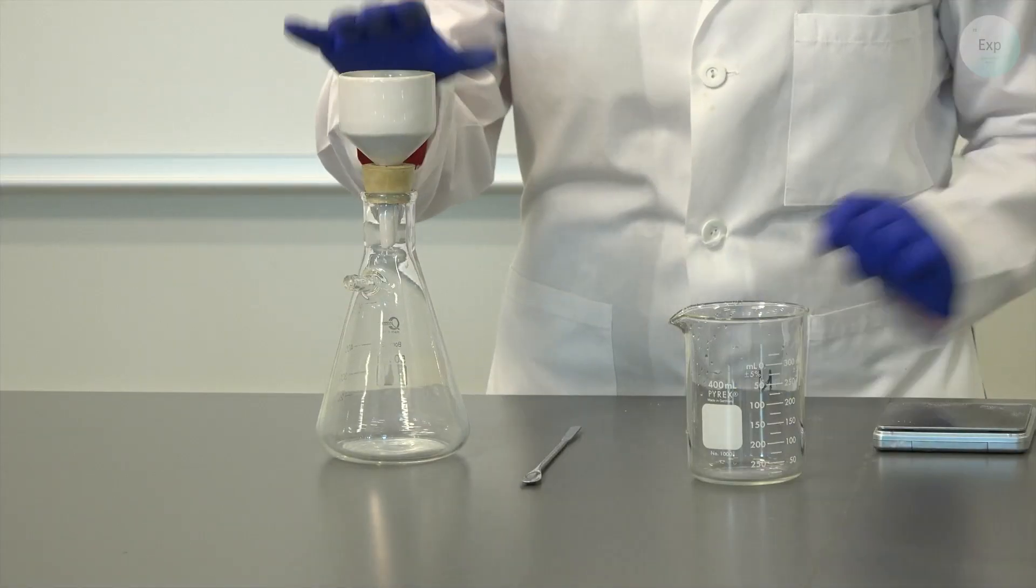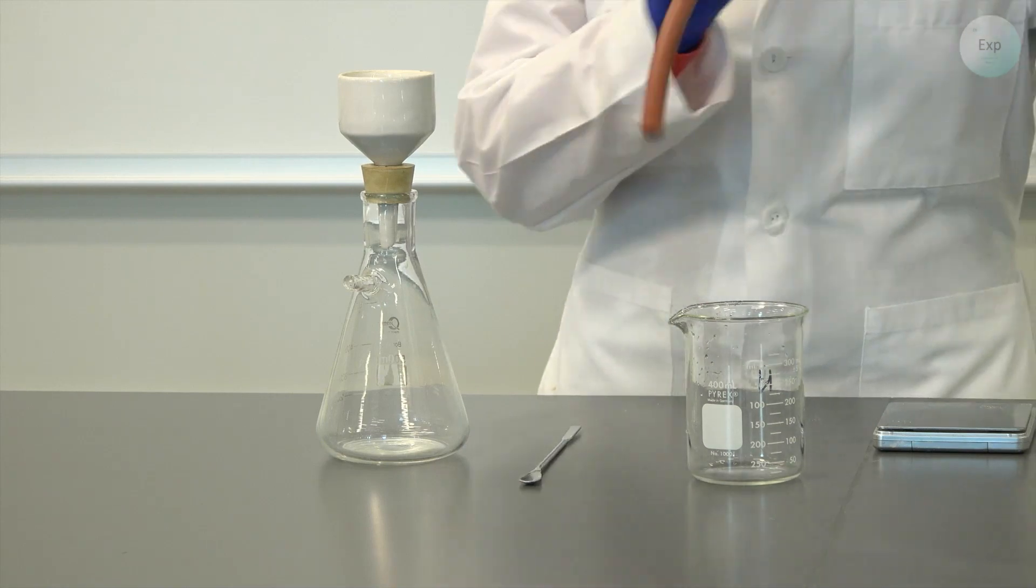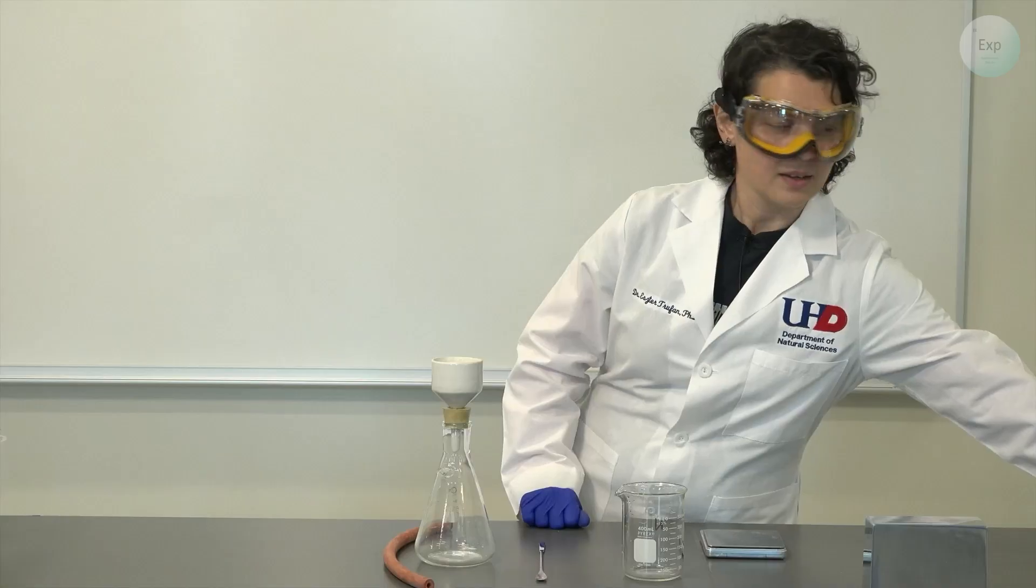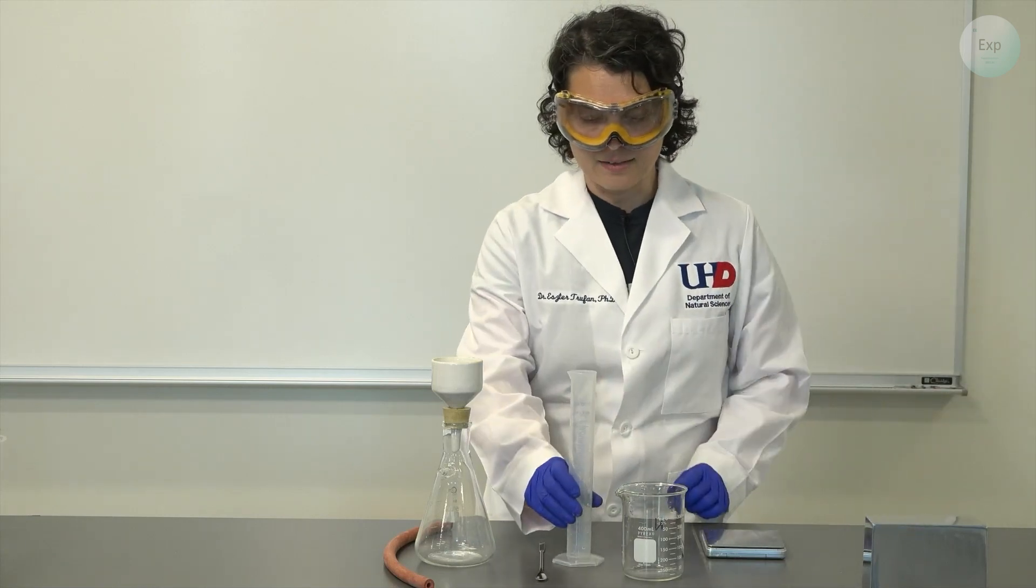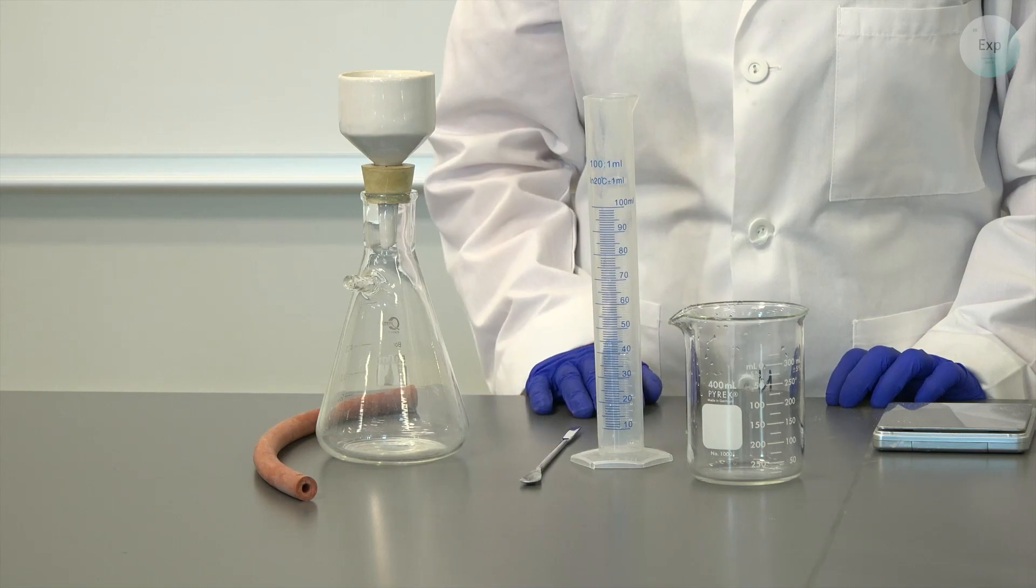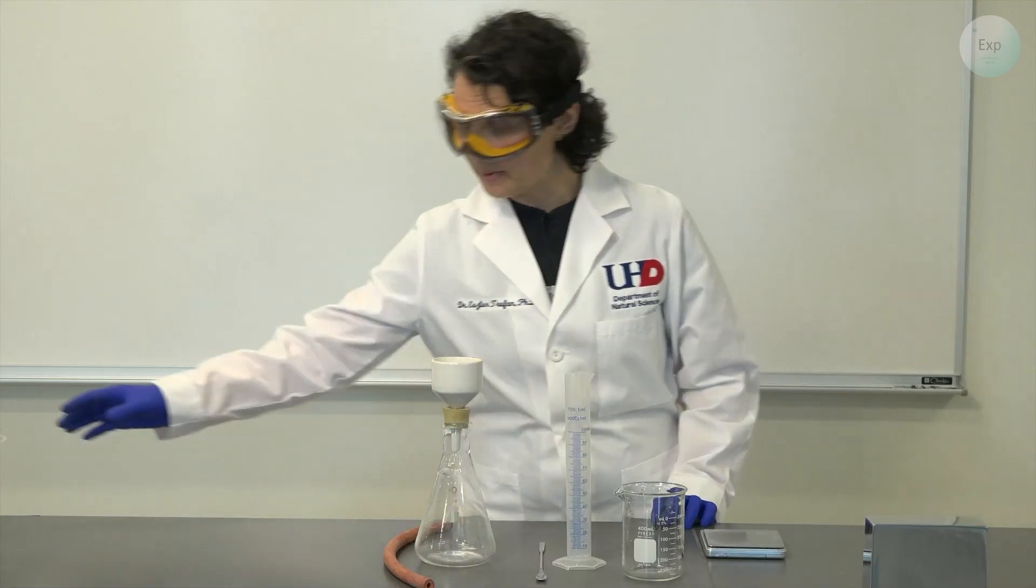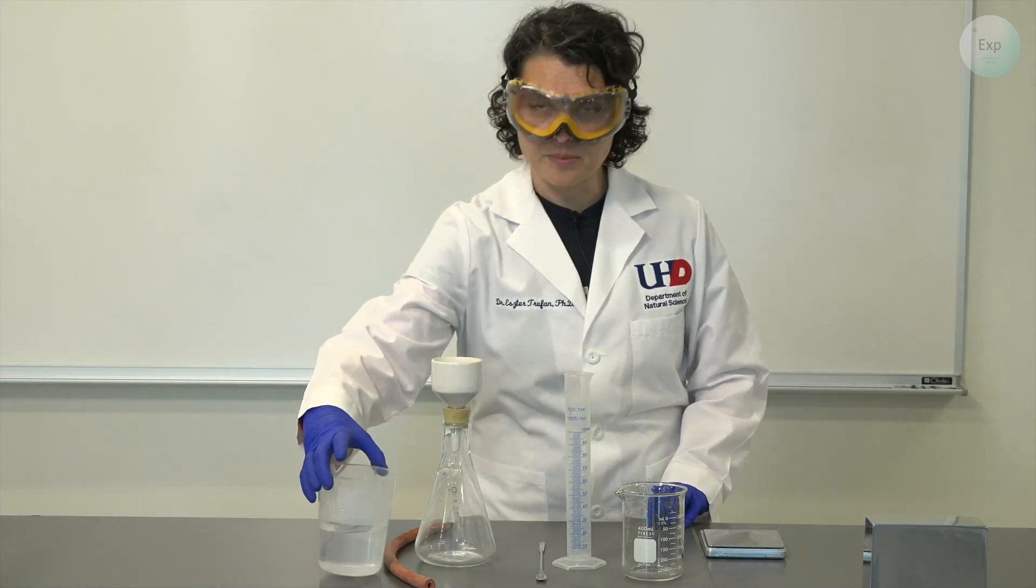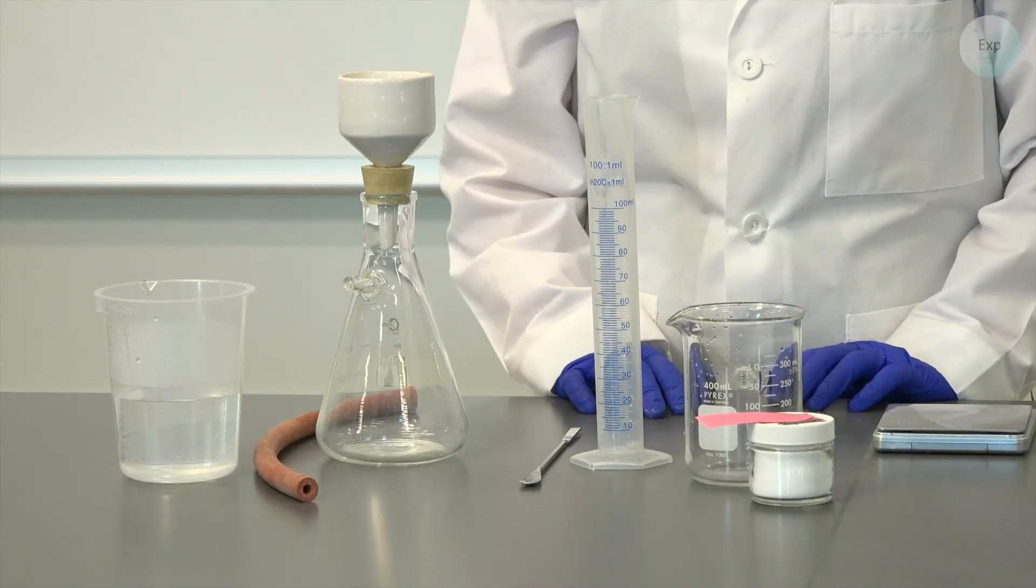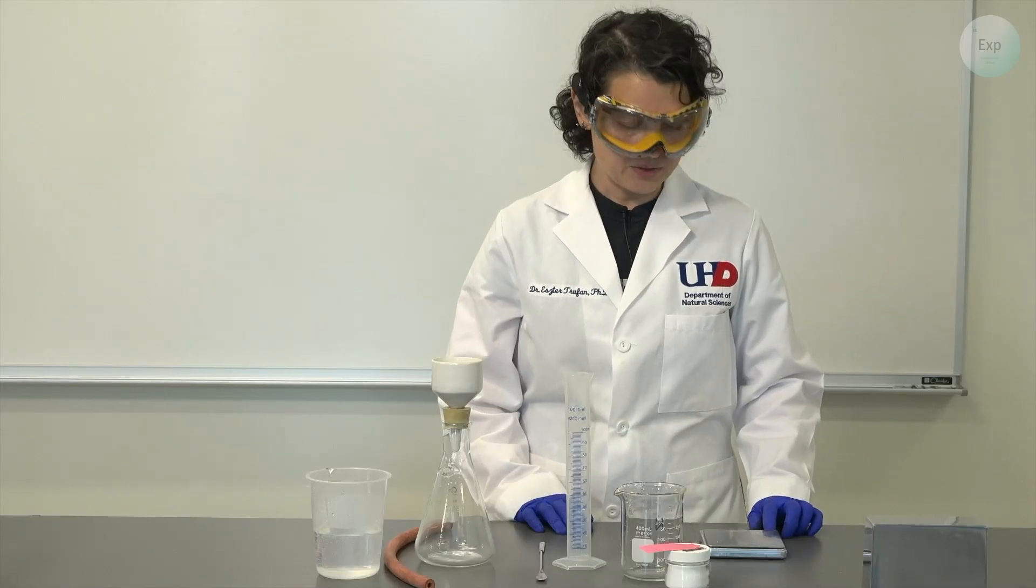I will need to filter my solution so I brought in a Buchner filtration setup or a vacuum filtration setup and then I am going to add a known quantity of water so I will need a 100 milliliter graduated cylinder. As for my chemicals I will need some deionized water and some alum. So let's get started.